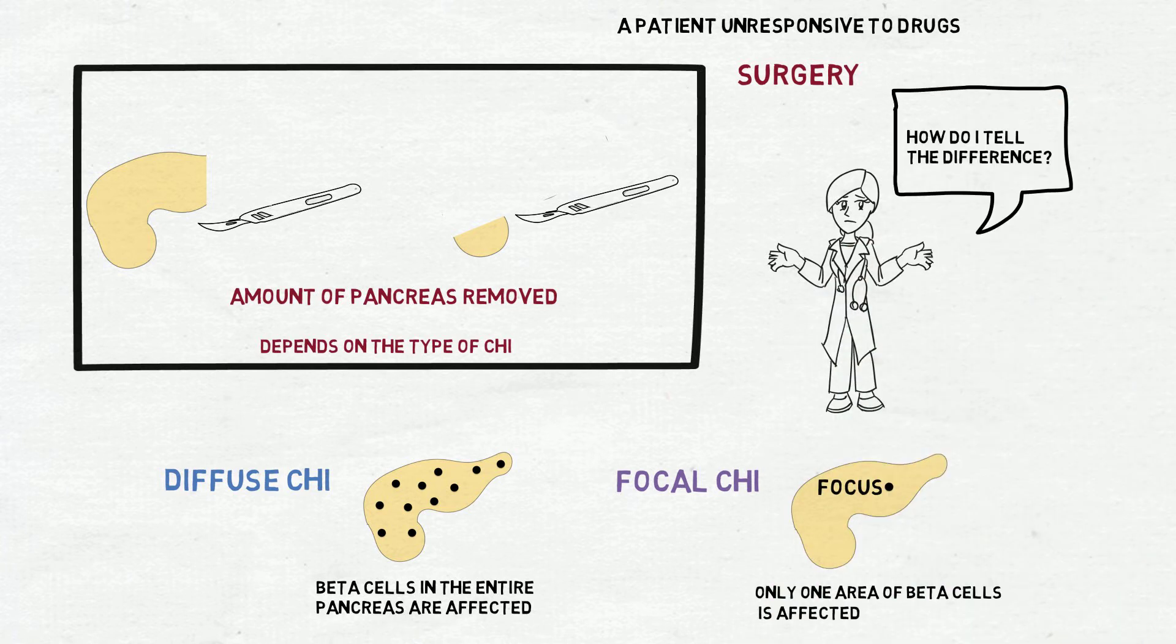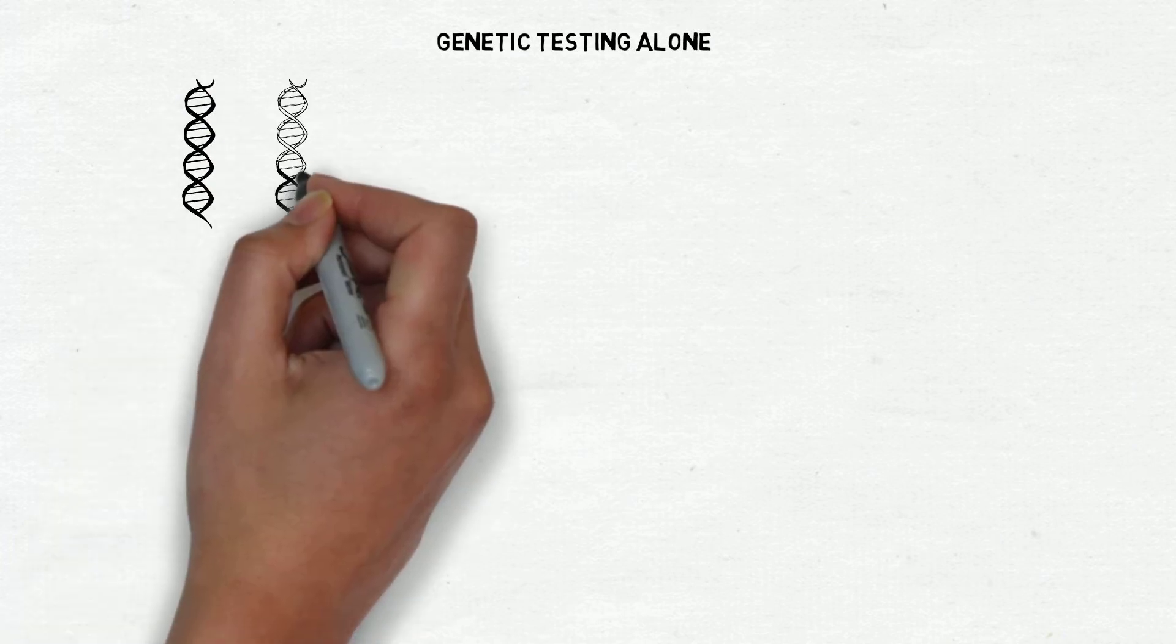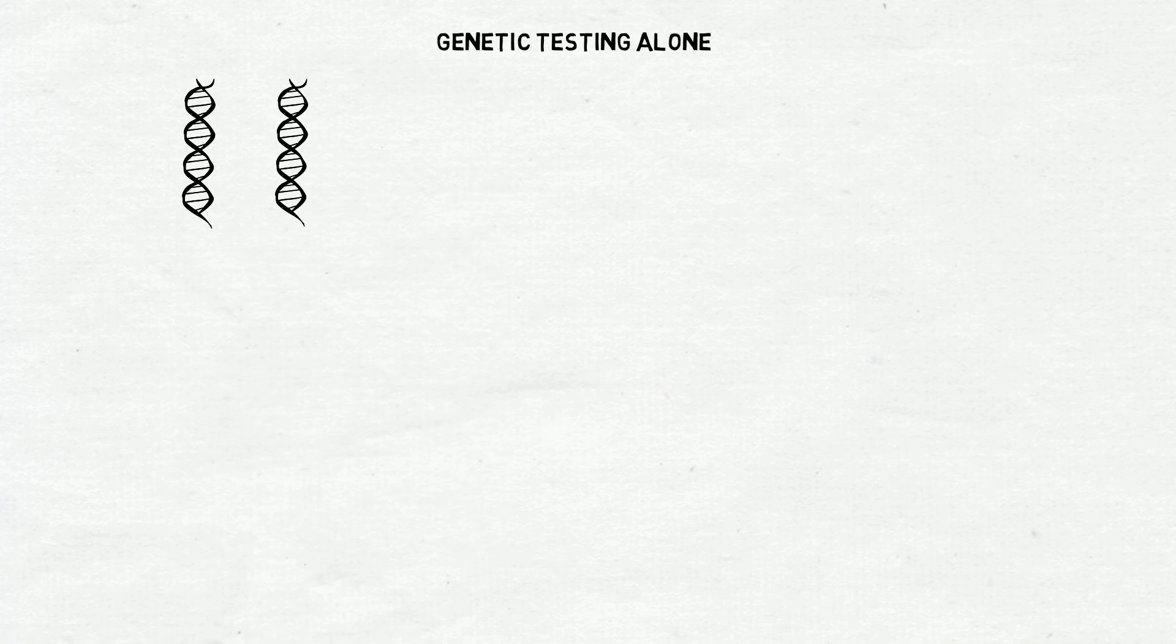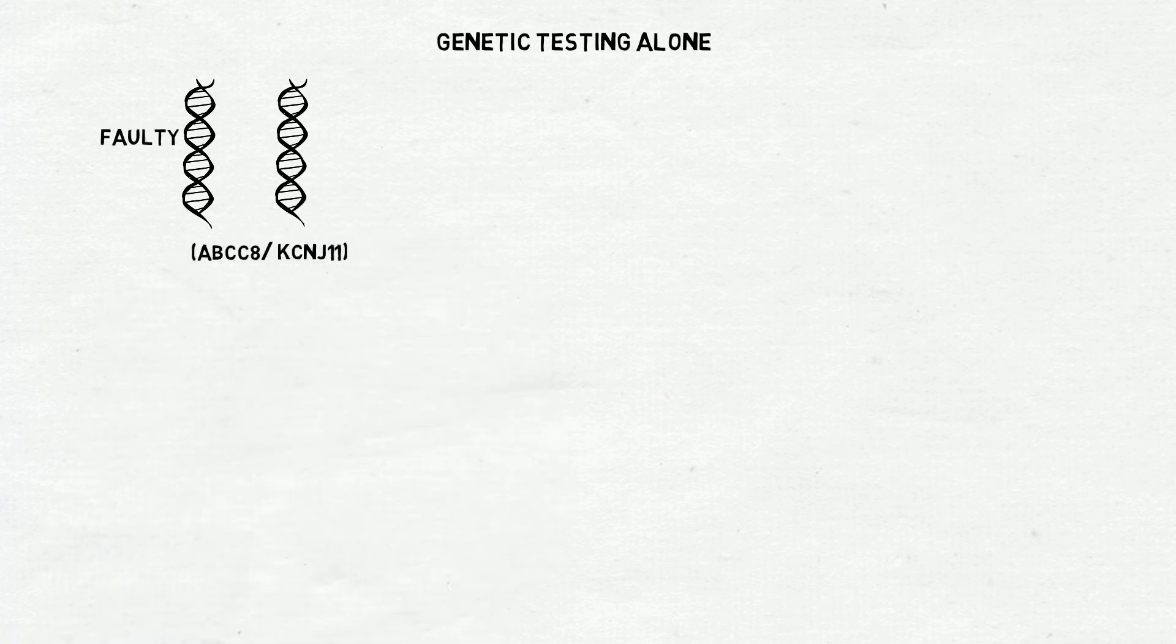Sometimes this distinction can be made via genetic testing alone. For example, if genetic testing reveals that both copies of a patient's ABCC8 or KCNJ11 genes are faulty, it suggests they have the diffuse form of the disease.